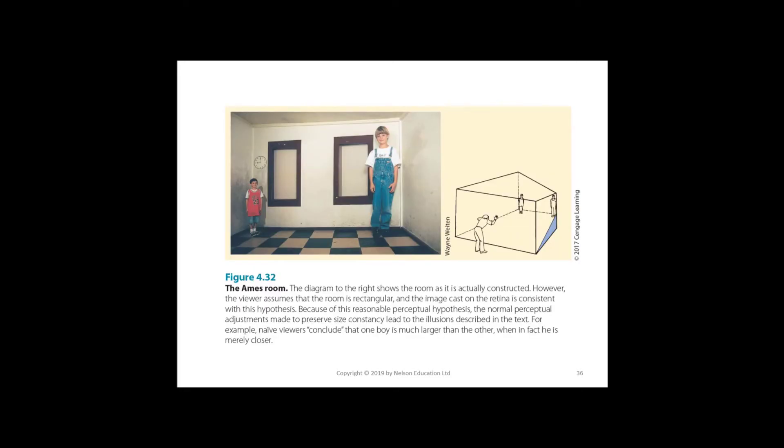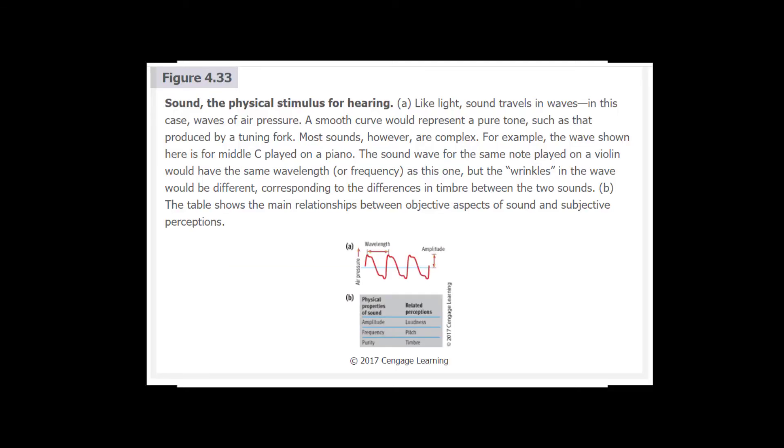In the Ames room, the diagram to the right shows how the room is actually constructed. However, because of this reasonable perceptual hypothesis, the normal perceptual adjustment made to preserve size constancy leads to illusions described in the text. For example, naive viewers conclude that one boy is so much smaller than the other when in fact he is just merely closer.